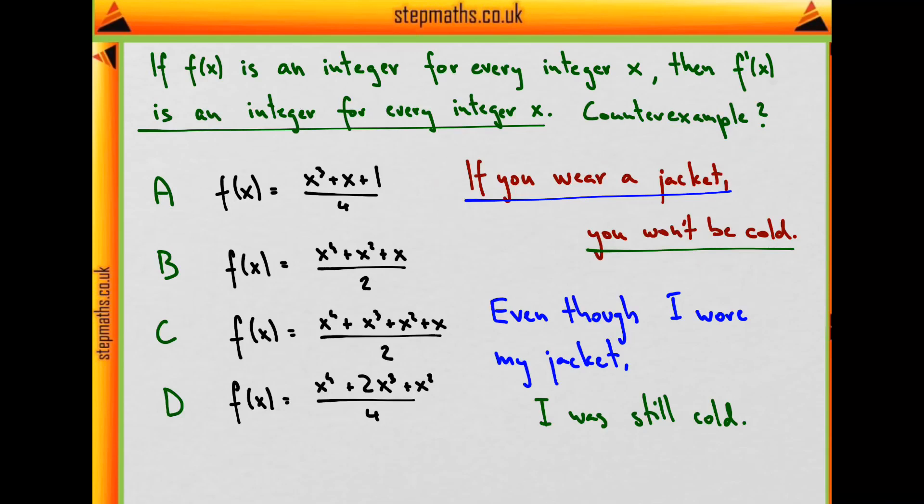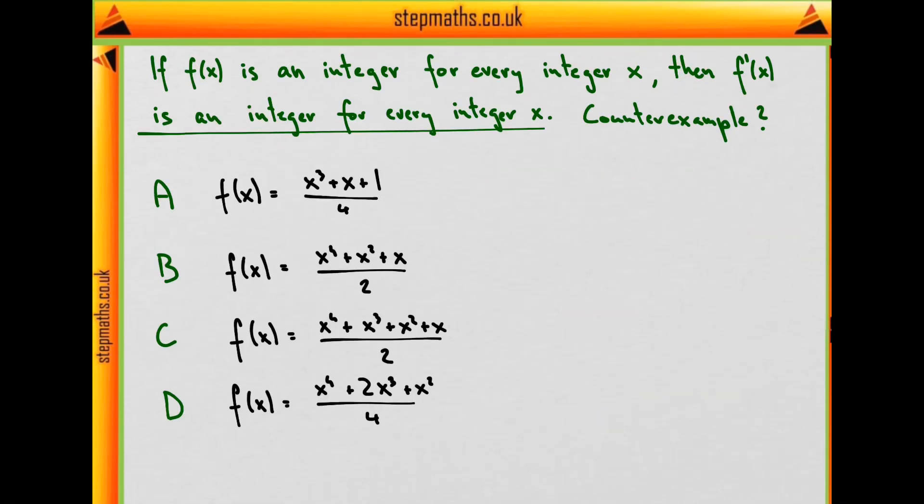In our case, we are looking for a function f(x) which is an integer for every integer x, but its derivative is not an integer for every integer x. The condition is satisfied, but the outcome is negative. That rules out the first two functions immediately. For example, for f(1), we get (1+1+1)/4, that's 3/4. So it's not true that this function is an integer for every integer. The exact same thing happens in B. So A and B are not good counterexamples to our statement.